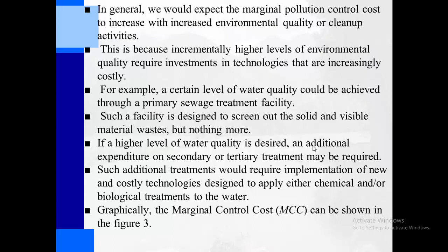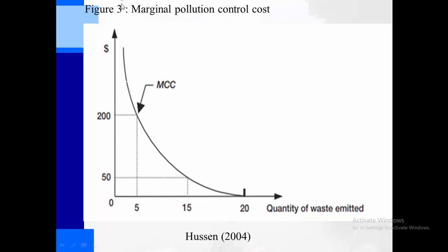Graphically, the marginal control cost can be shown in a figure. On the y-axis we have the cost; on the x-axis we have the quantity of waste emitted. As we move from 0 to the right toward 20, this means an increase in emitted waste, which means lower quality of environment. As we move upward from 0, this means an increase in the marginal pollution control cost. This curve is downward sloping — the marginal pollution control cost (MCC) slopes downward from left to right. This means there exists an inverse relationship between environmental quality and the pollution control cost.